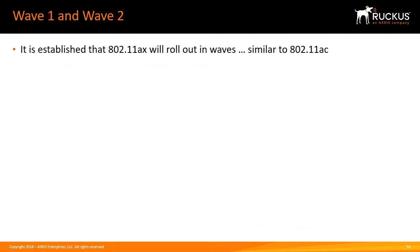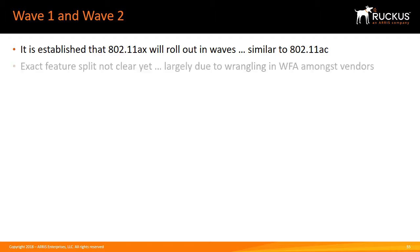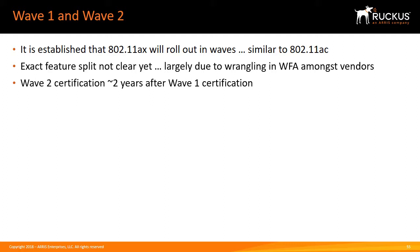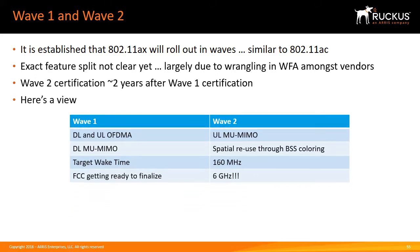802.11ax will roll out in waves similar to 802.11ac. The exact feature split is not yet clear, due largely to wrangling in the Wi-Fi Alliance among various vendors. Wave 2 certification will occur one to two years after Wave 1 certification. Wave 1 will include downlink and uplink OFDMA, downlink multi-user MIMO, target wake time, and hopefully FCC finalization.